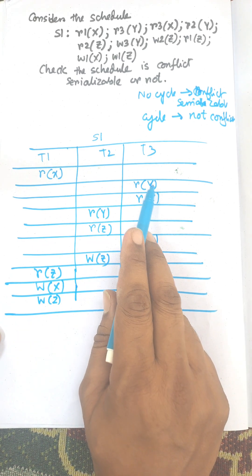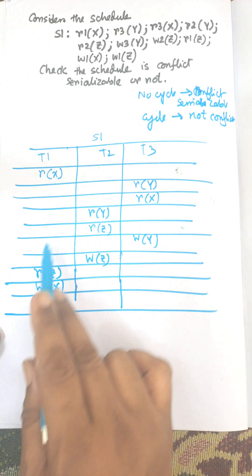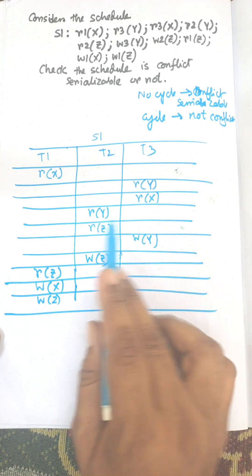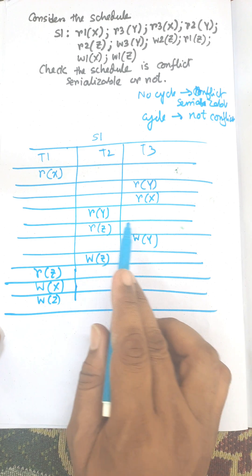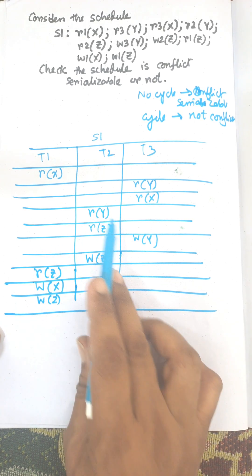read of Y. We need to check the write of Y. There is no operation of write here for T2 and T1. Next, next one is read Y by T2. We need to check T1 and T3 transaction for write Y. There is a write Y.